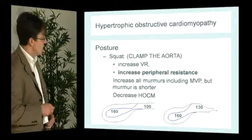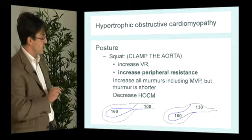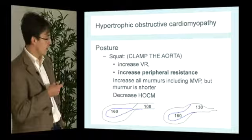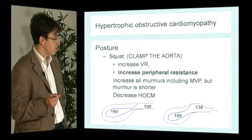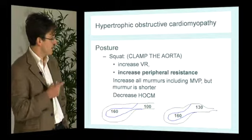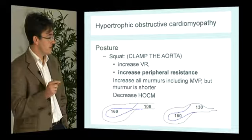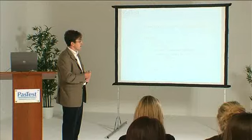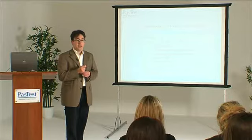For example, standing the LV pressure may be 160 mmHg and aortic pressure 100 mmHg, giving a gradient of 60 mmHg. When squatting, aortic pressure only falls to 130 mmHg, reducing the gradient to 30 mmHg — so the outflow tract walls are held more widely open and the HOCM murmur intensity diminishes. At the bedside: if squatting increases murmur intensity, it's likely a valvular stenotic murmur; if it decreases intensity, it may be an outflow tract obstruction such as HOCM.